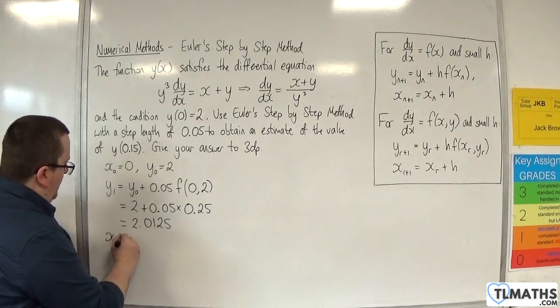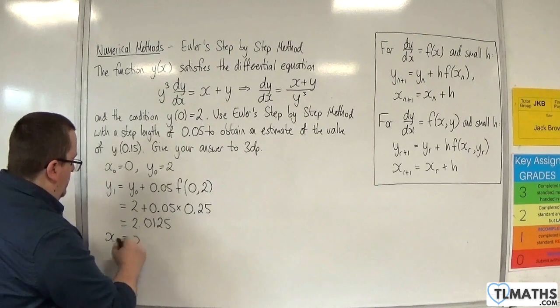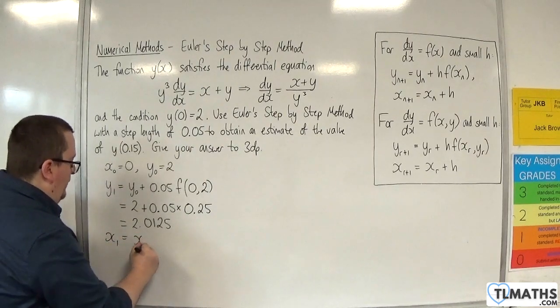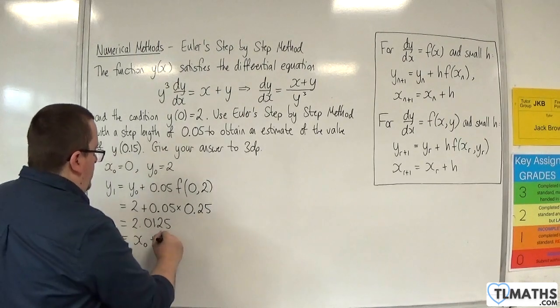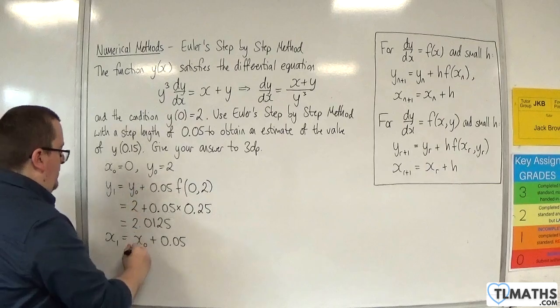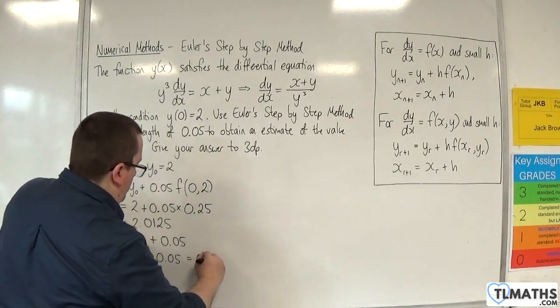So find the corresponding x value, which is going to be the previous x value. Sorry, not x₂, x₁, which is going to be the previous x value, x₀ plus h, which is the 0.05. So x₀ here is 0, and of course that's 0.05.